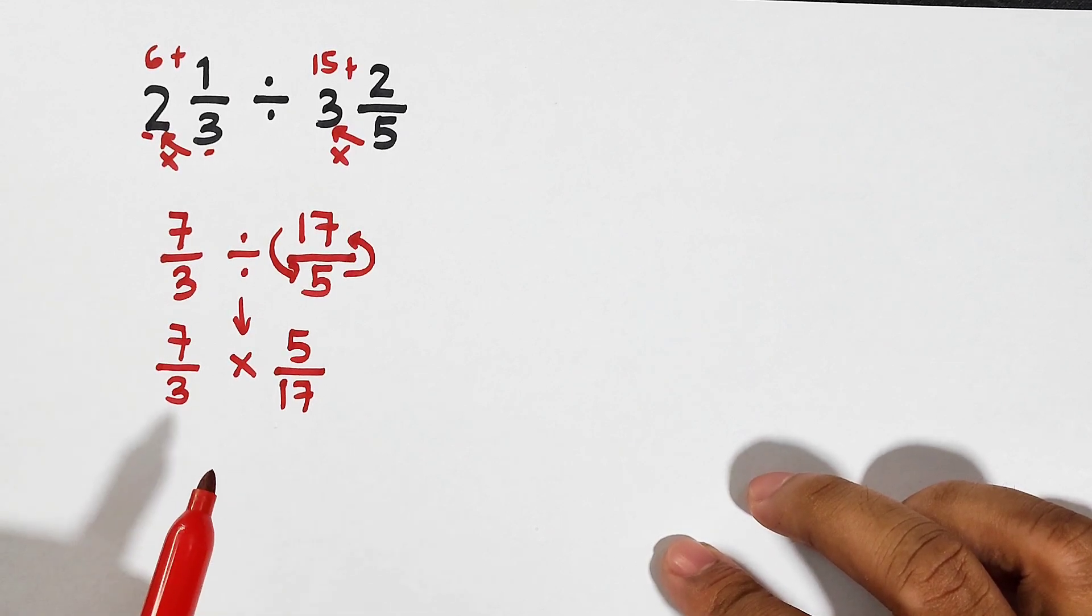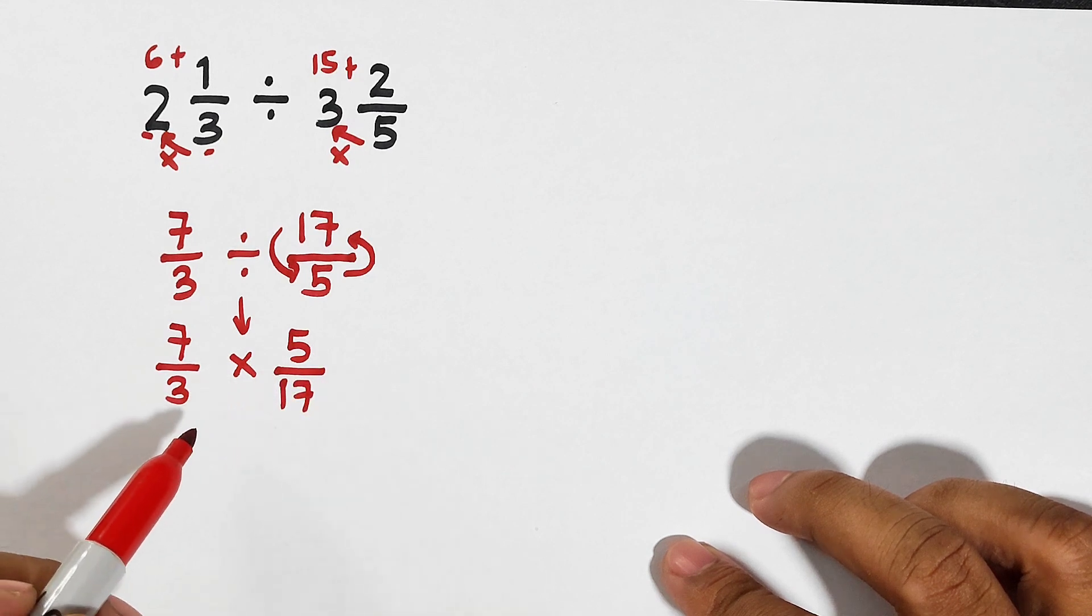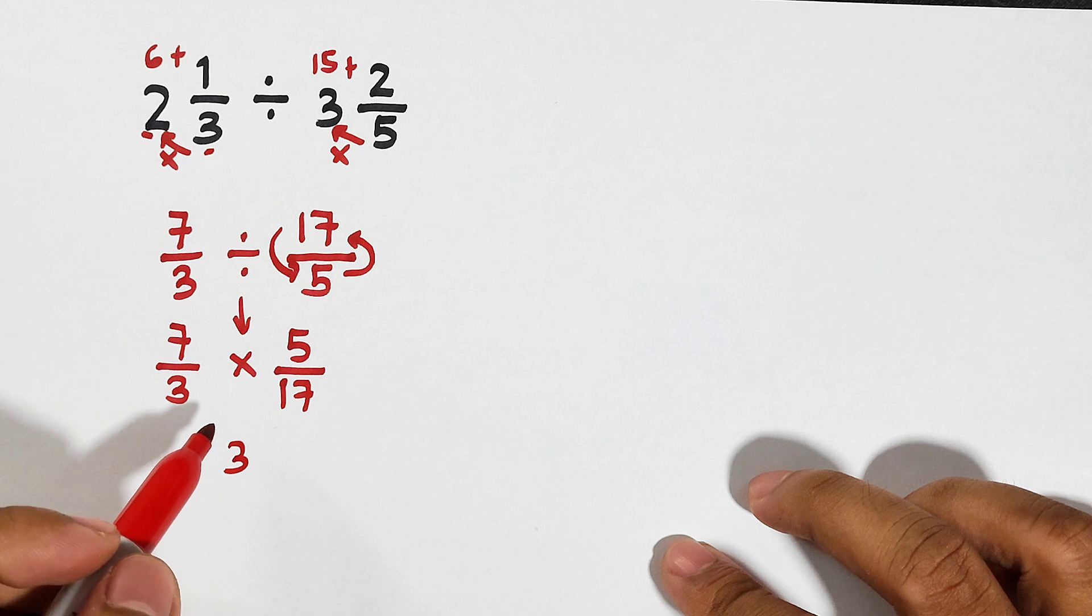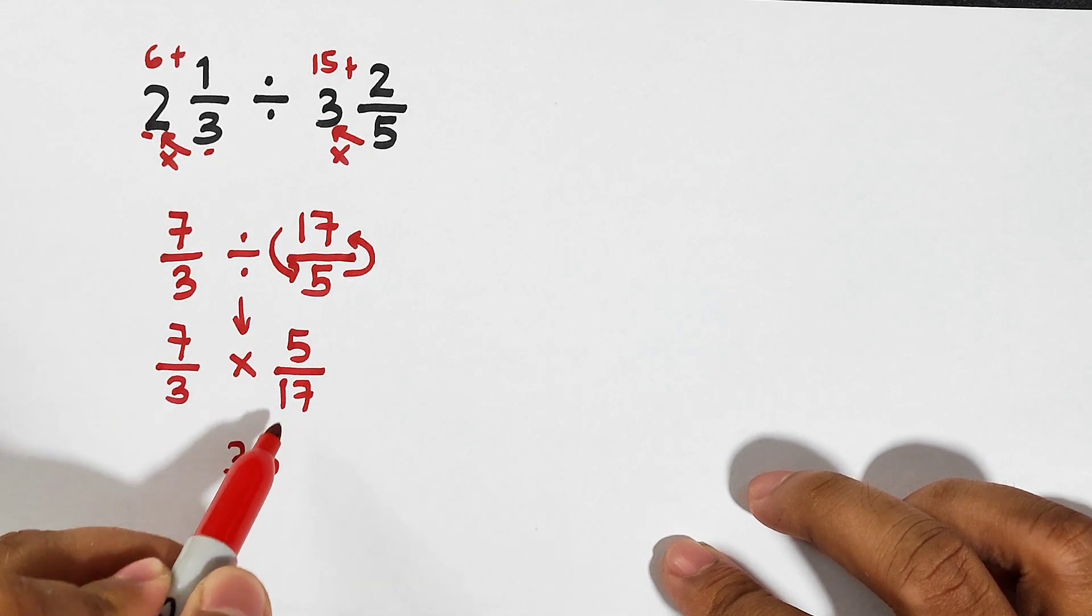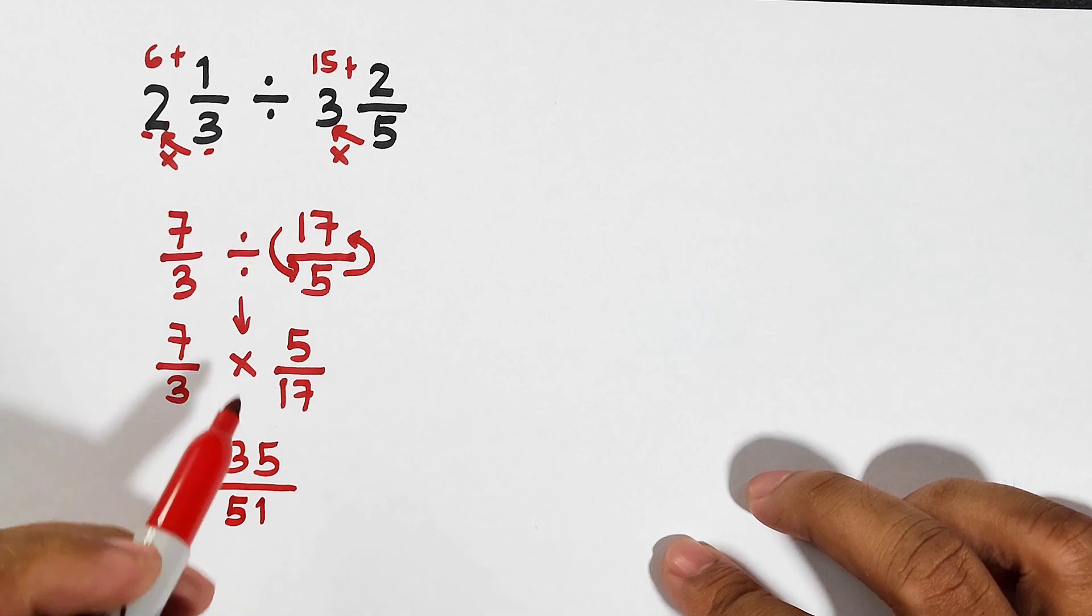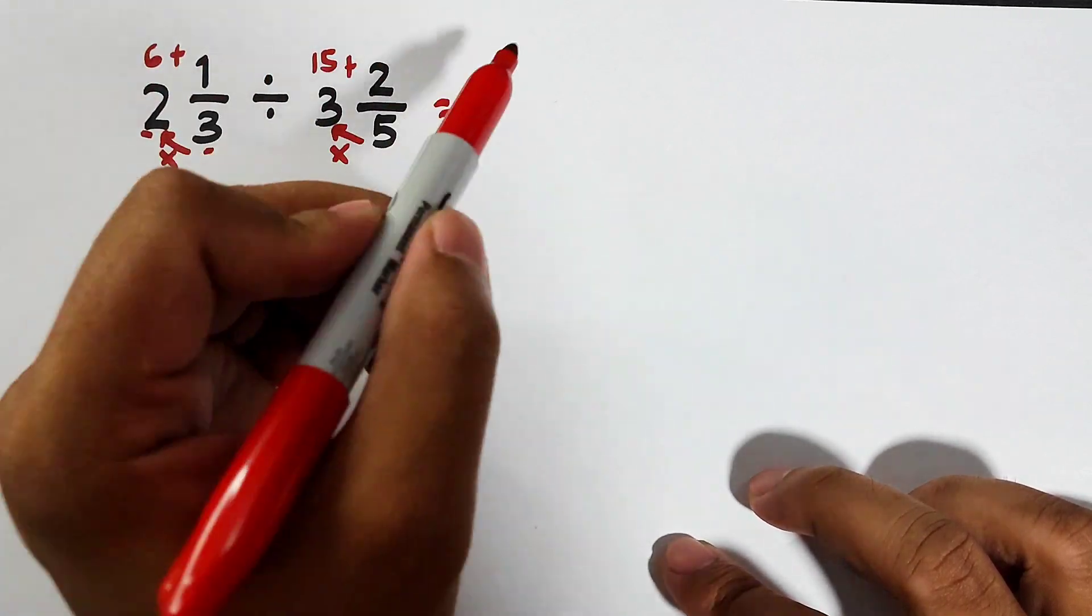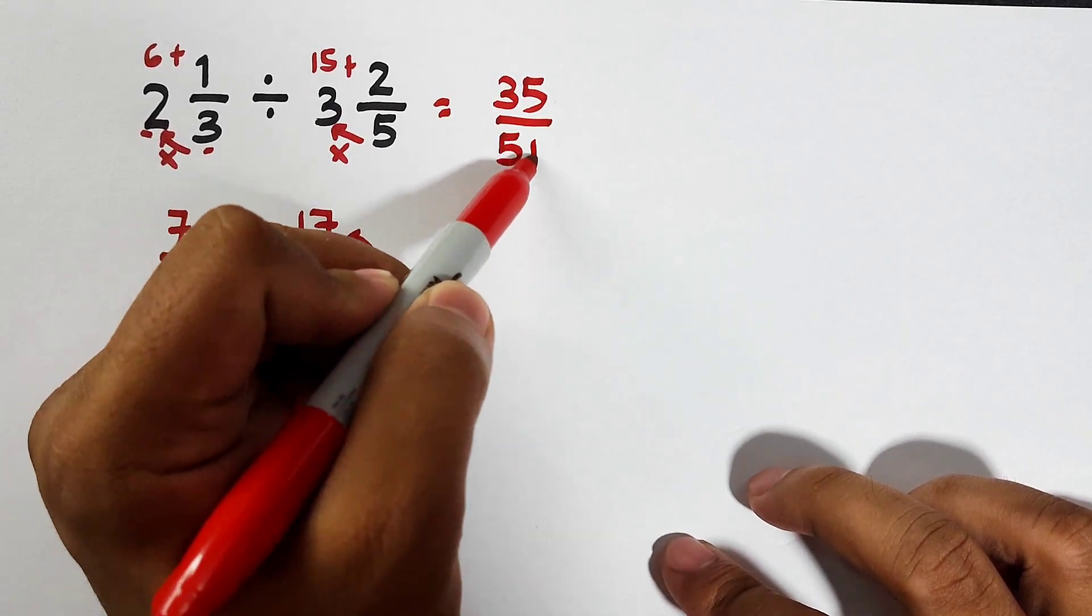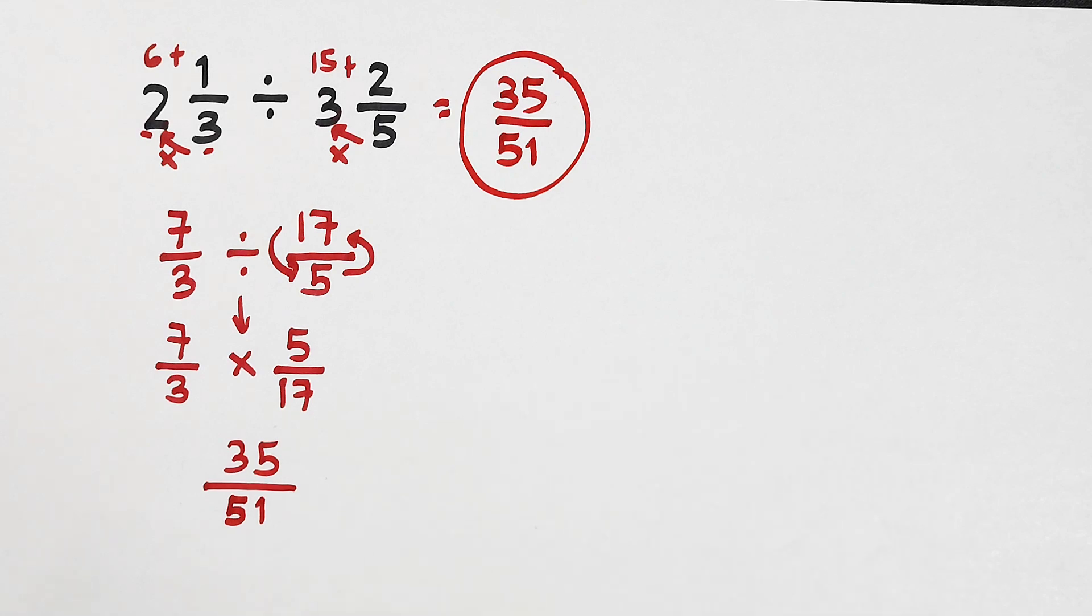Then after that, you can directly multiply. 7 times 5, that is equal to 35. 3 times 17 is equal to 51. And now the quotient of these two mixed numbers is equal to 35 over 51. That is how you divide mixed numbers.